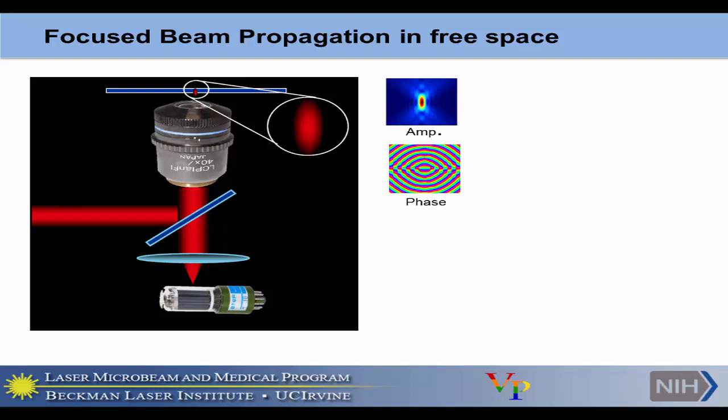This is a simple focused beam setup. We have a collimated beam coming in and bouncing off this mirror, then passing through the objective to create a small high-intensity spot — that is the focal spot, which is an important part of this microscopy. The shape is a cigar shape, and the phase distribution is like that — this is focused beam propagation in phase space.